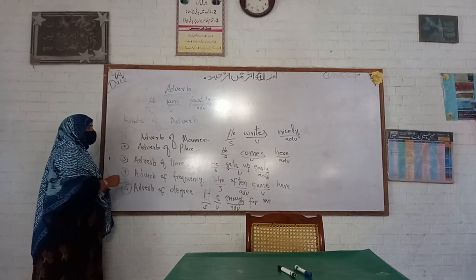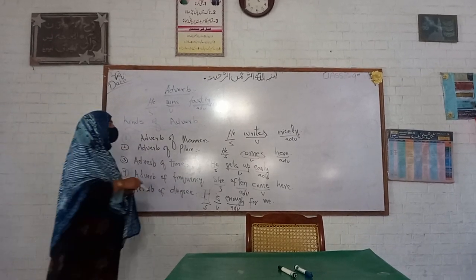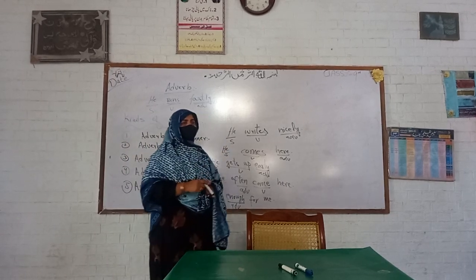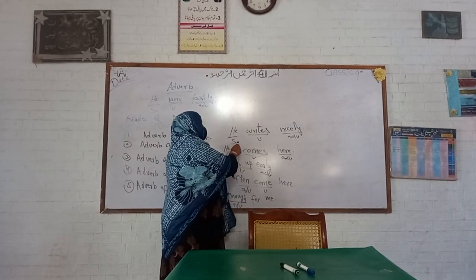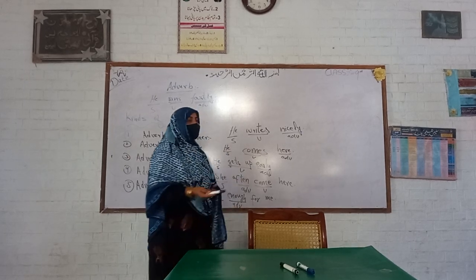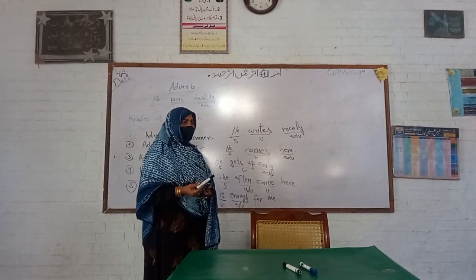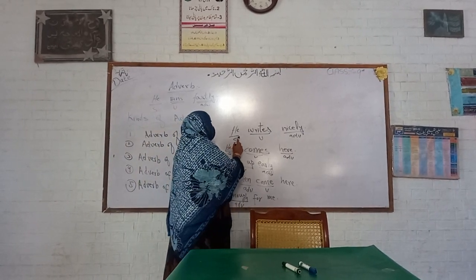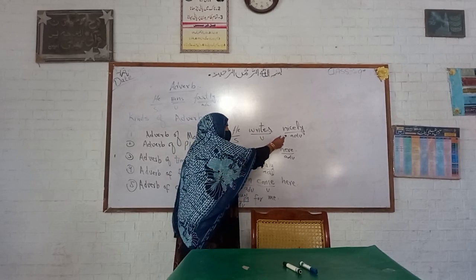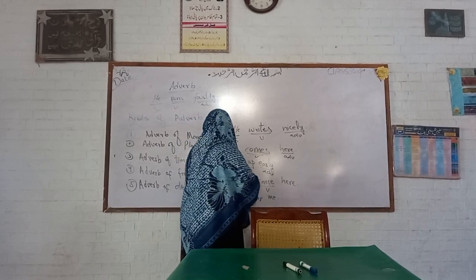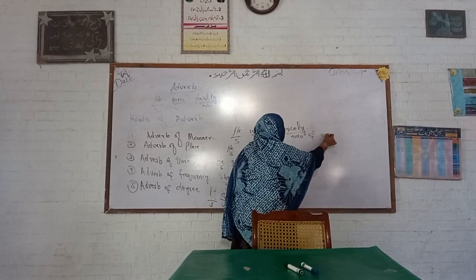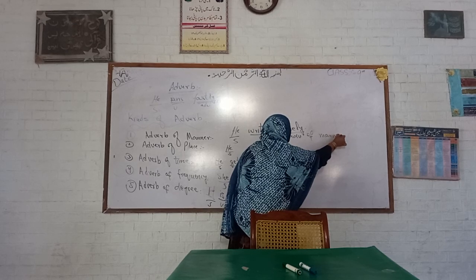The very first kind is adverb of manner. It means how that action is performed. For example, 'He writes nicely' — words like nicely, beautifully, roughly are adverbs of manner. So here 'nicely' is performing the role of adverb of manner. This is your adverb of manner.